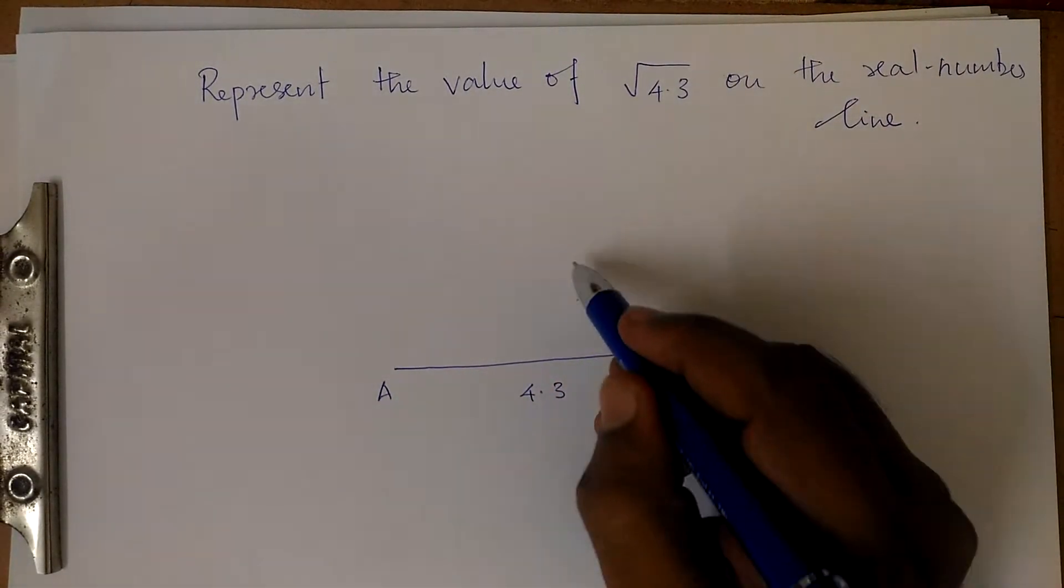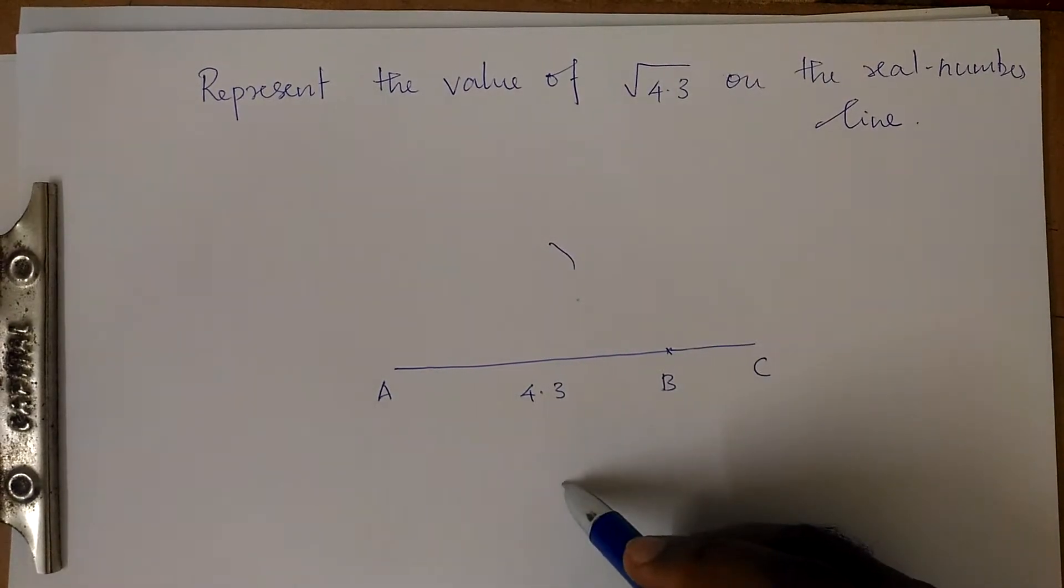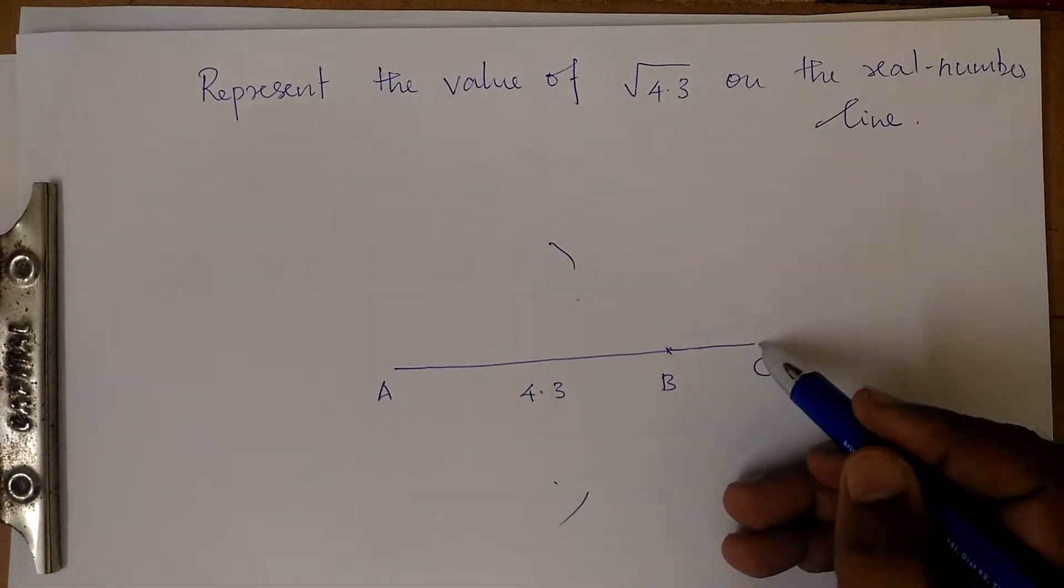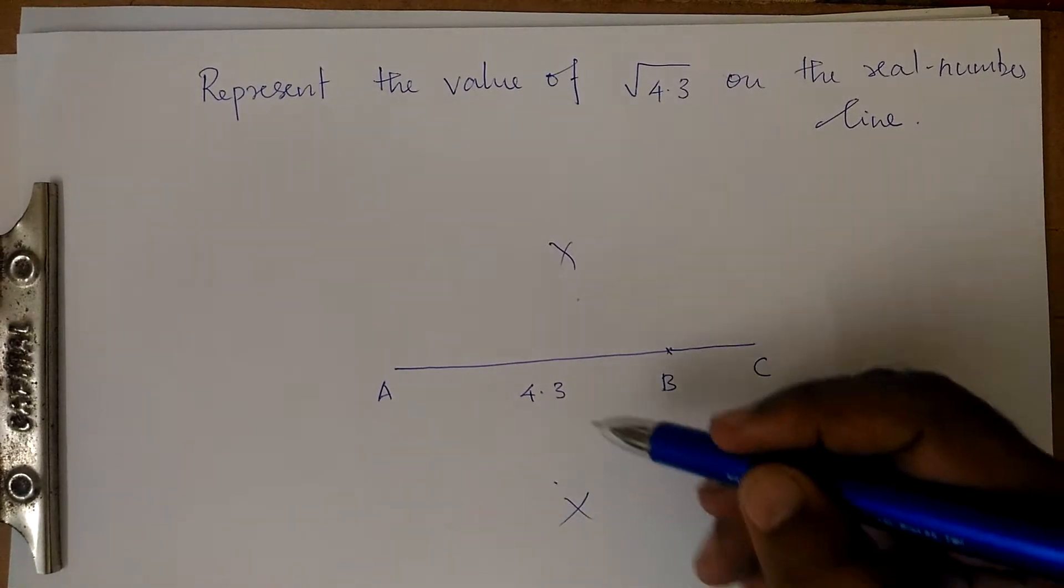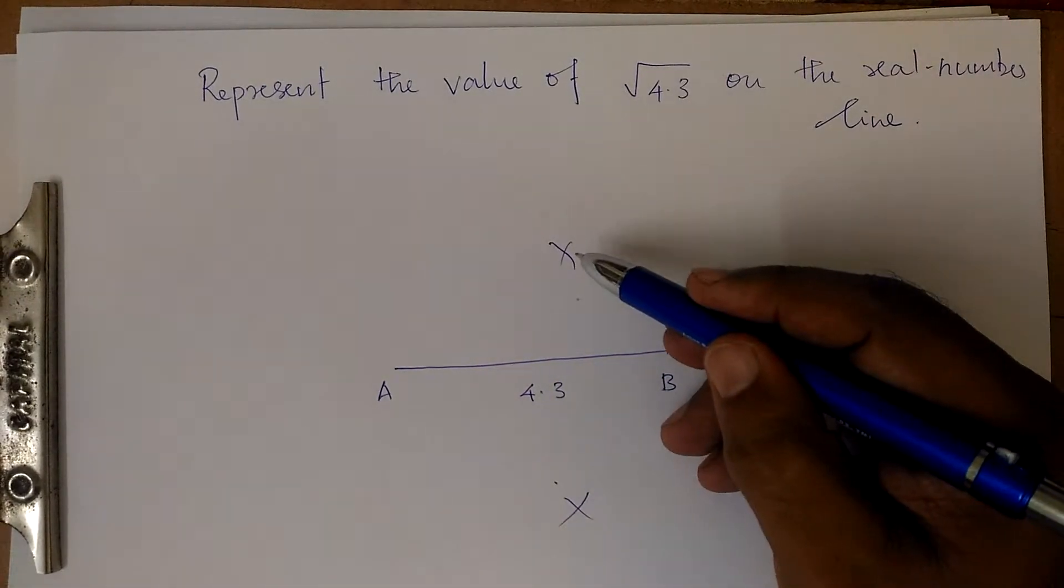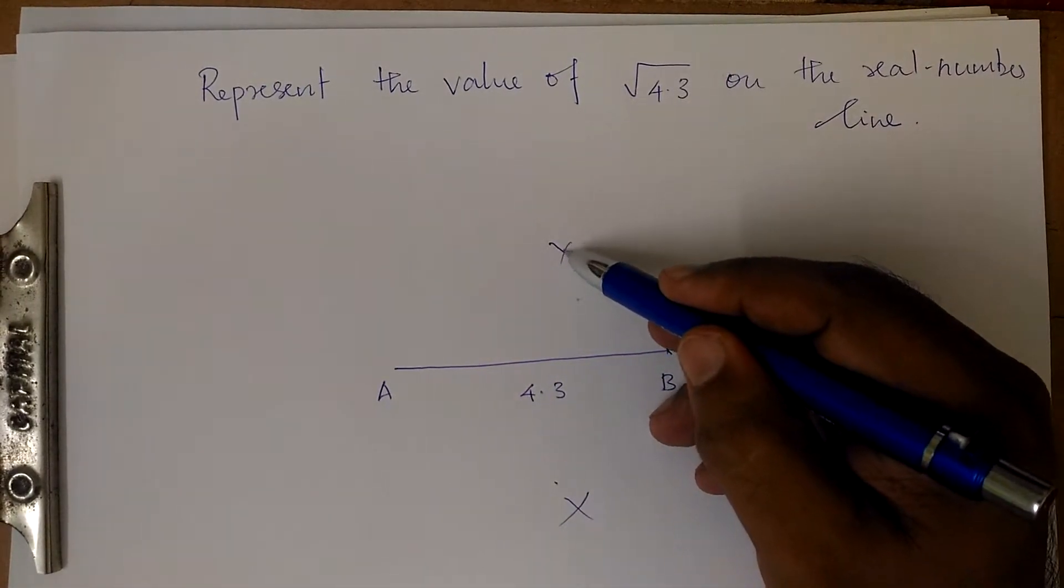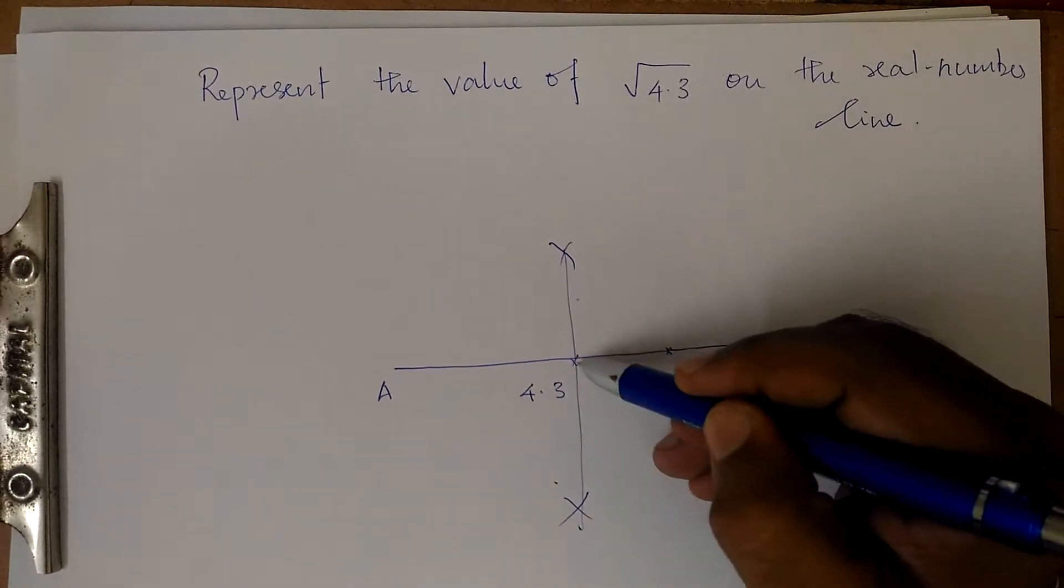Cut an arc on one side, then from C cut another arc. This should all be done with the same radius. If you join these, you will get point O, which is the center of AC.